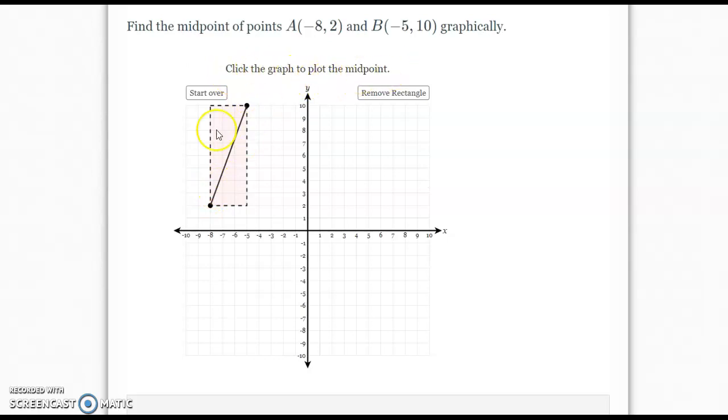Now it says, click the graph to plot the midpoint. Now we've got to find the middle of this rectangle, and this is where we're going to use some reasoning skills. Look at this. The rectangle is 3 units long. What's halfway of 3 units? It's right here in the middle. And then, from 2 to 10, what's the height of the rectangle?